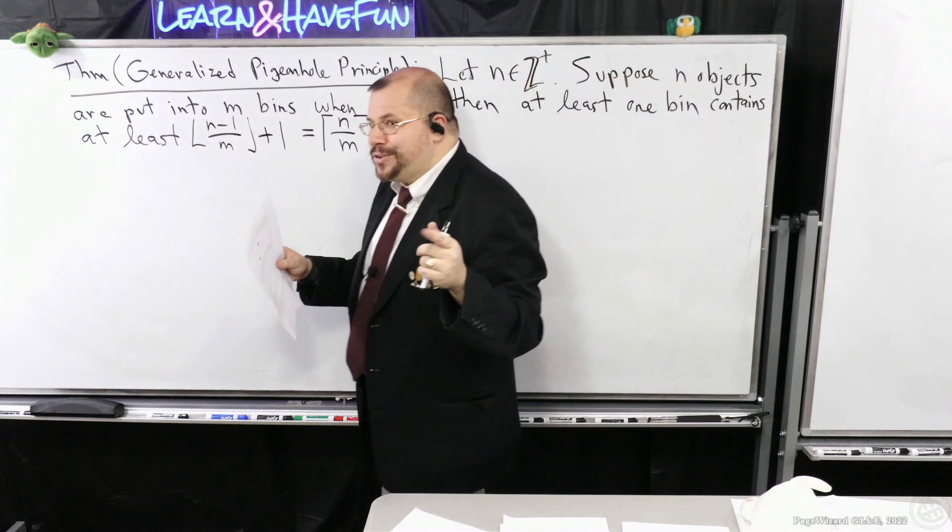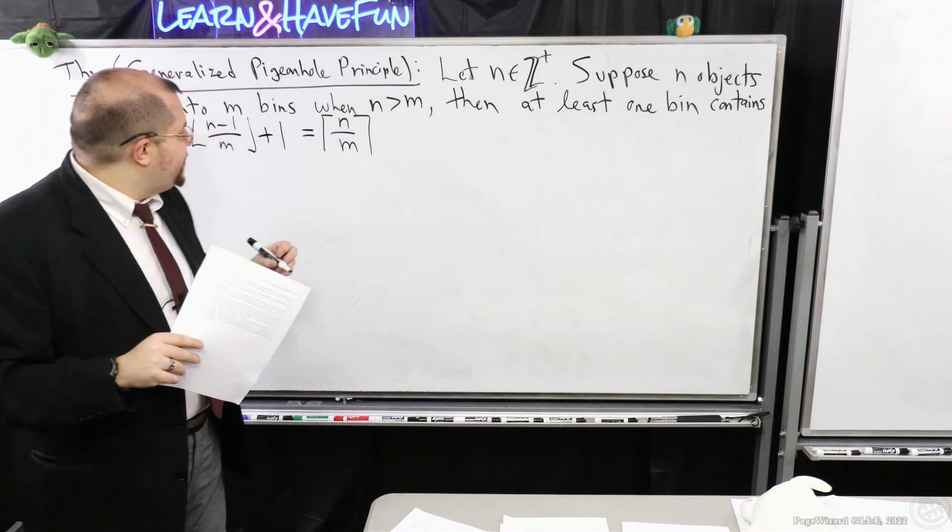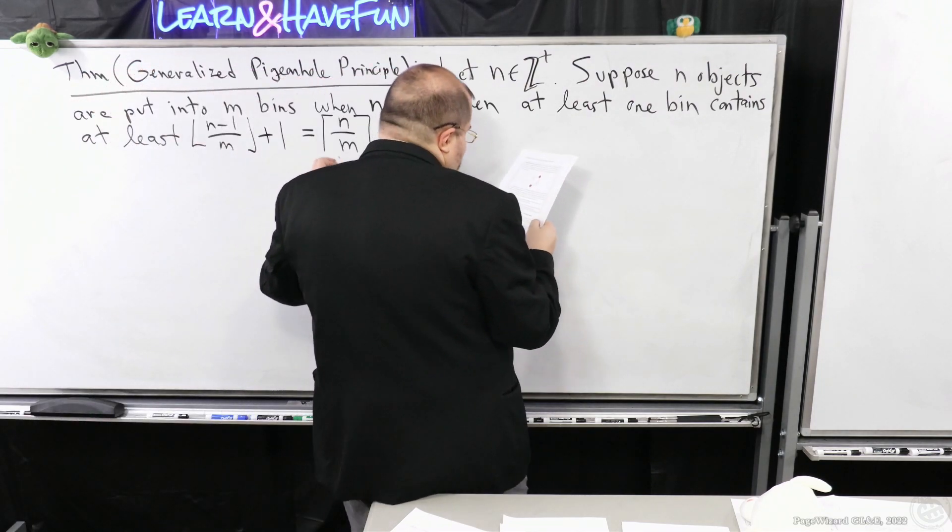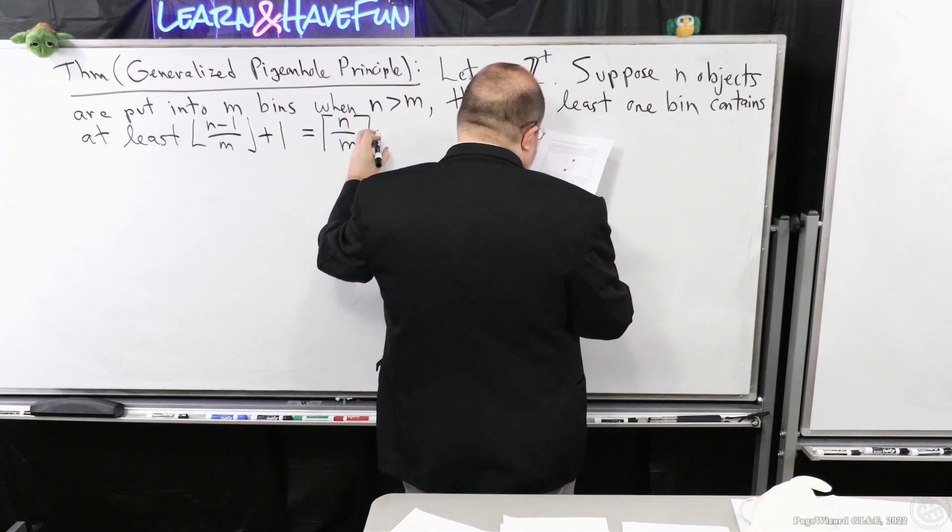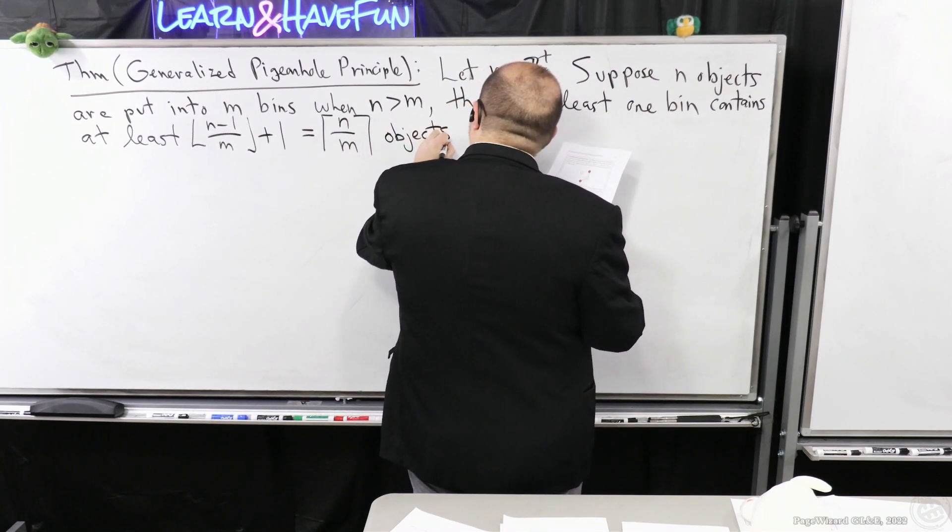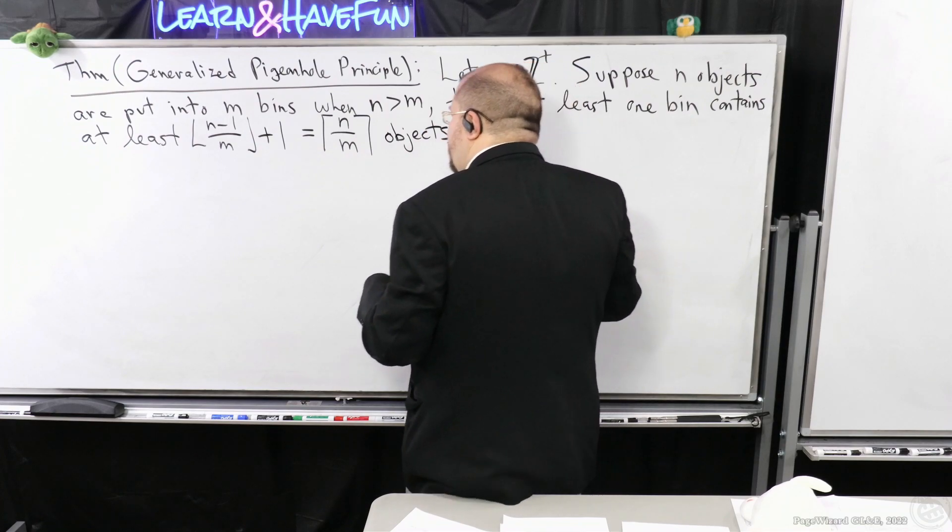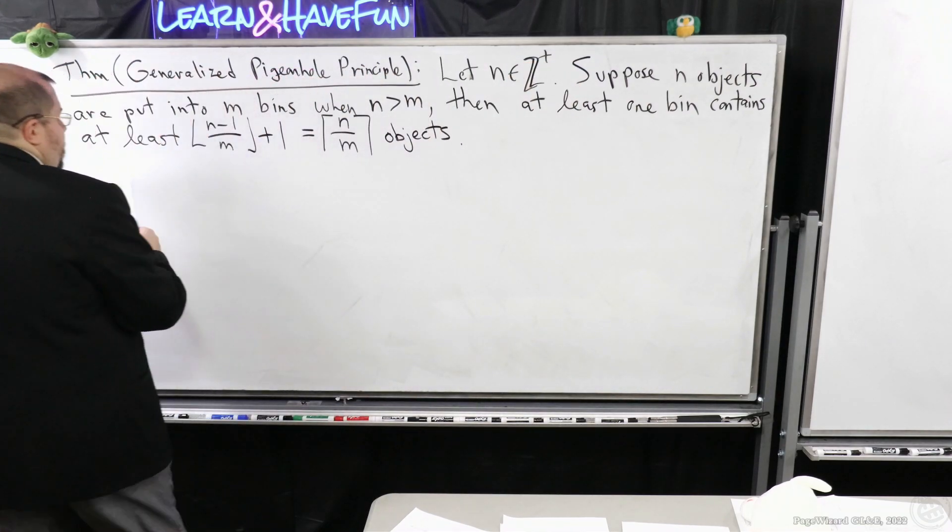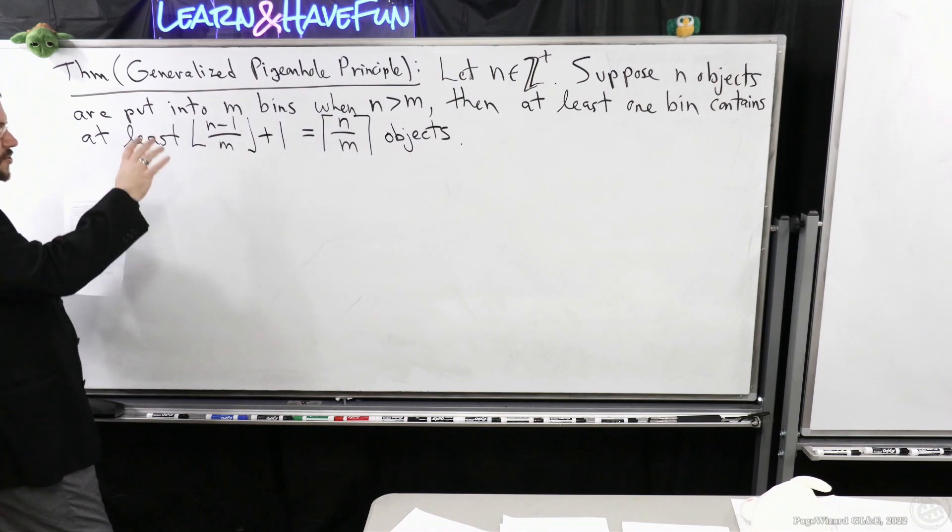Likewise the ceiling of 2.9 is 3 and the ceiling of 2.001 is also 3. But the ceiling of 2 is 2. So at least the ceiling of n over m objects. Now I'm not going to prove this equivalency here but this is true because these are both positive integers.